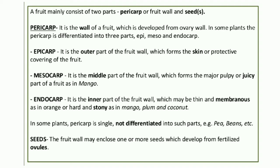There are some basic parts of the fruit. The main parts are two: pericarp and seed. Pericarp is the fruit wall. Pericarp is the wall of a fruit which is developed from the ovary wall.